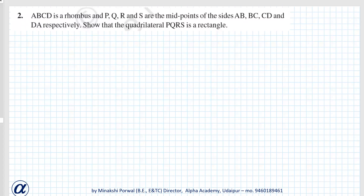Exercise 8.2, Question number 2. ABCD is a rhombus. P, Q, R, S are midpoints of sides AB, BC, CD and DA respectively. Show that quadrilateral PQRS is a rectangle.